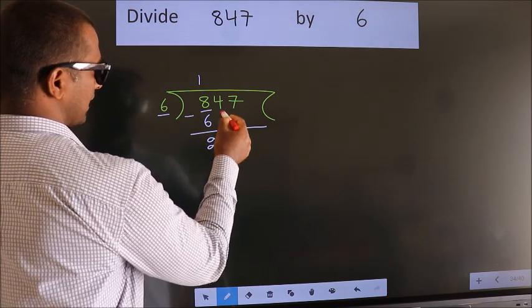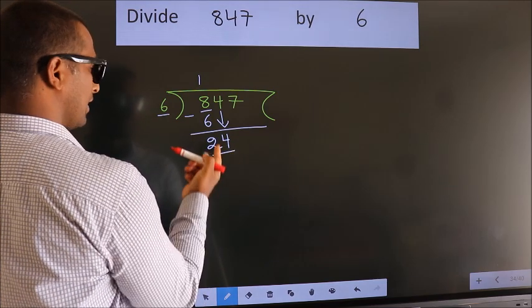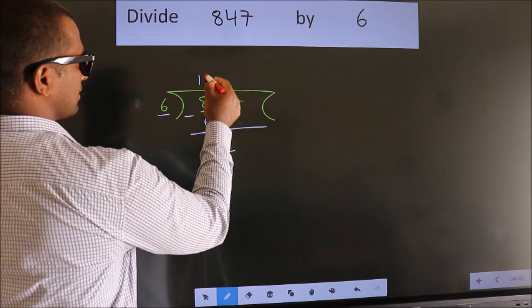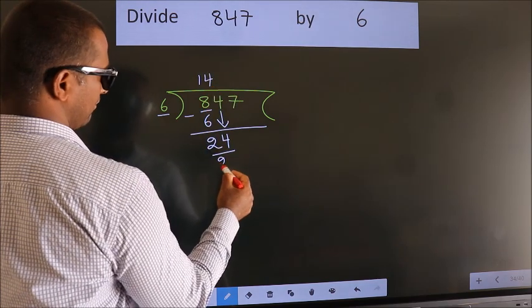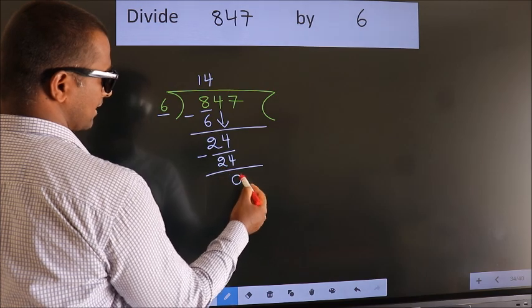After this, bring down the beside number. So, 4 down. So, 24. When do we get 24? In 6 table, 6 fours 24. Now, we subtract. We get 0.